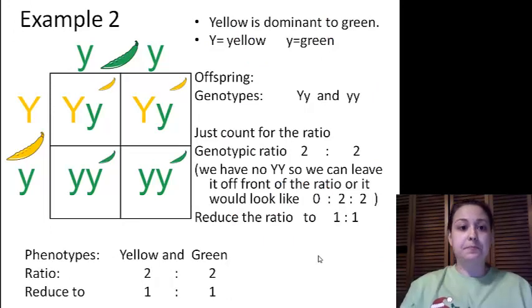Let's try another one. Here we have yellow is dominant to green. So big Y is yellow and little y is green. Our genotype, what do we see here in the letters? We have a big Y and a little. We have big Y little y, this one and this one.